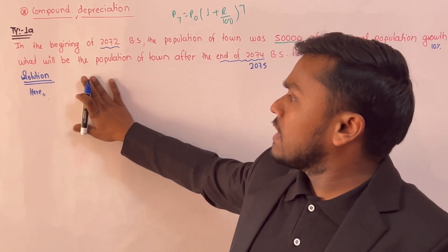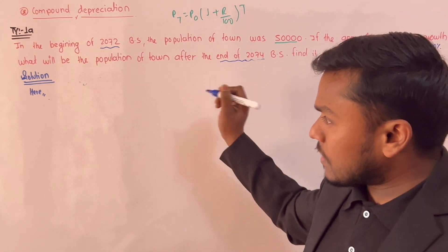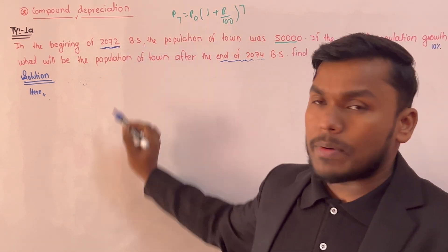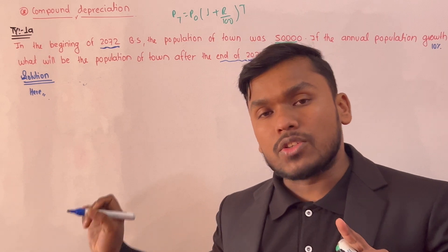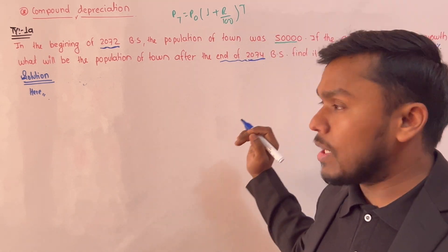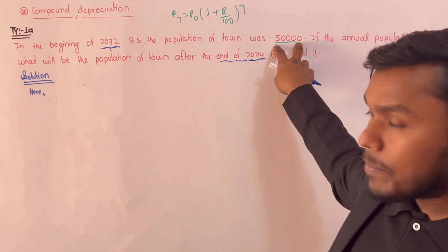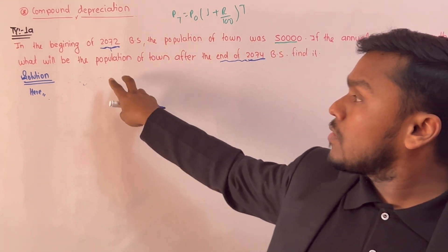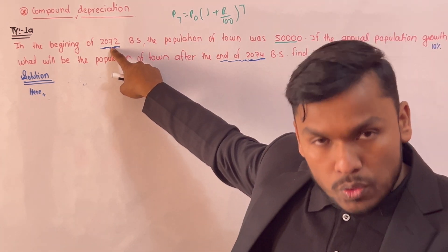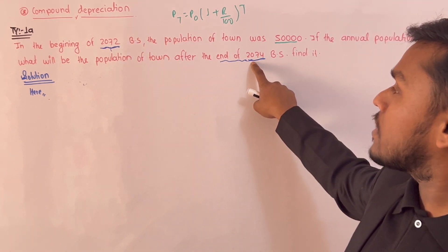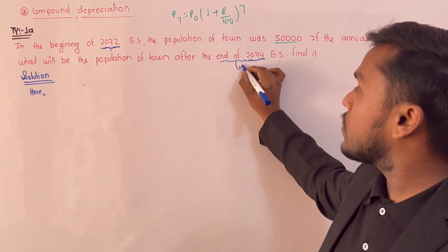Here is an example with a twist. In the beginning of 2072, at the end of 2075 — the main twist in this question. In the beginning of 2072, at the end of 2074 — this is the time-related twist.